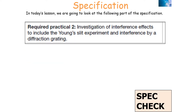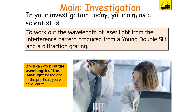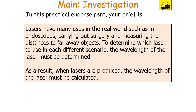We're looking at the AQA A-level physics specification required practical 2: investigation of interference effects, including the Young's slit experiment and interference by diffraction grating. The aim is to work out the wavelength of laser light from an interference pattern produced by the Young's double slit and also from a diffraction grating. This is important because lasers have many real-world uses such as endoscopes, surgery, and measuring distances to far-away objects — so determining the wavelength is essential.